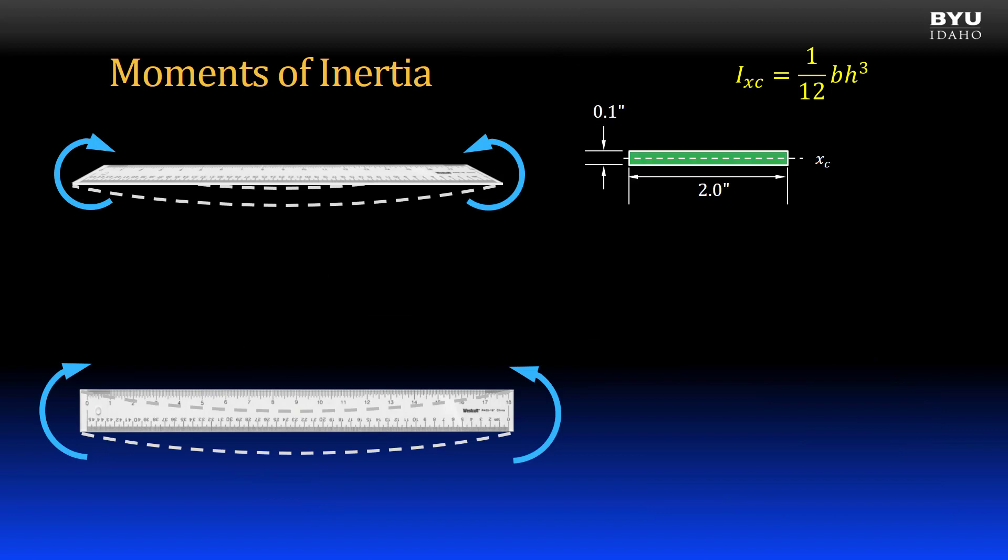Let's go back to the ruler. When I bend the ruler the easy way, the axis is parallel to the long dimension of the cross-section. So, the base, which is parallel to the axis direction, is 2 inches. And the height, which gets cubed, is 0.1 inches. The moment of inertia is 0.1667 times 10 to the negative 3. Look at the units, inches to the fourth power. What does inches to the fourth power mean? Nothing. It is just the units of I. That is what makes it tough to visualize.